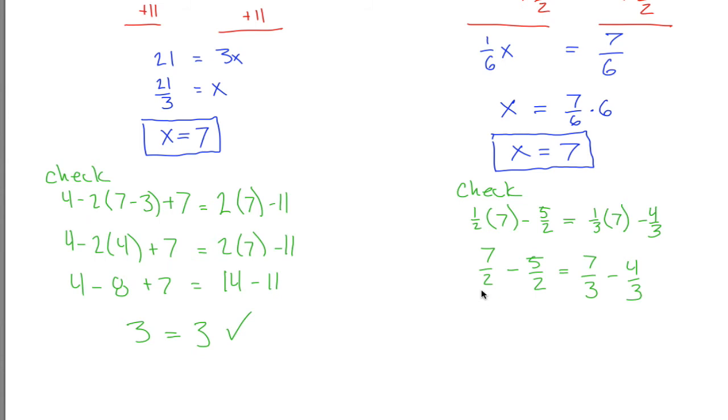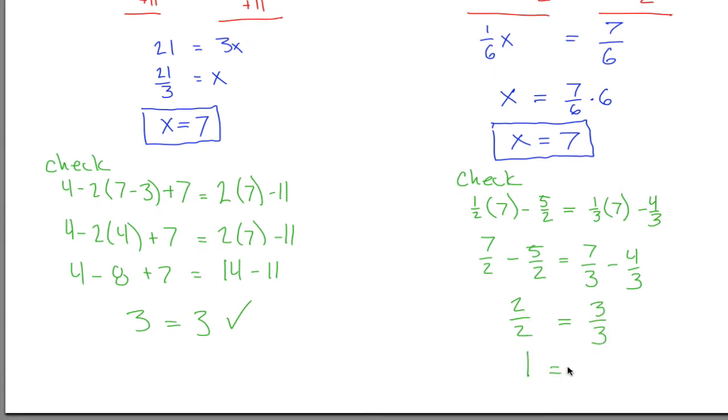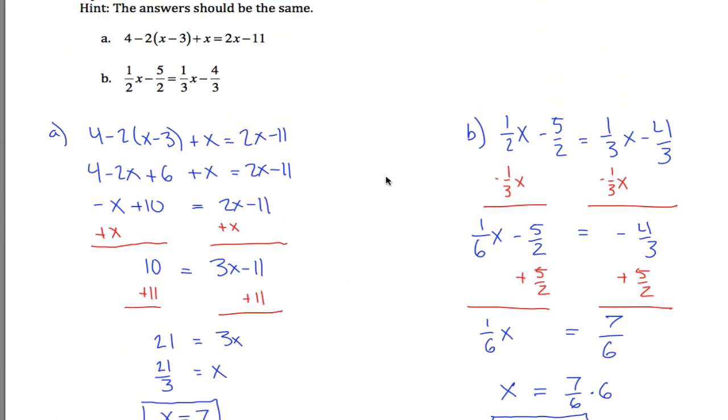So what I got to do is subtract these fractions, 7 halves minus 5 halves. Fortunately, I have a common denominator here. 7 minus 5 is just 2, so I get 2 halves. And on this side, I also have a common denominator. 7 minus 4 is 3, so I get 3 halves. And sure enough, these are equal. 1 over here and 1 over here. Looks like it does check out. Looks like I got the right answer. So I am done with this problem.